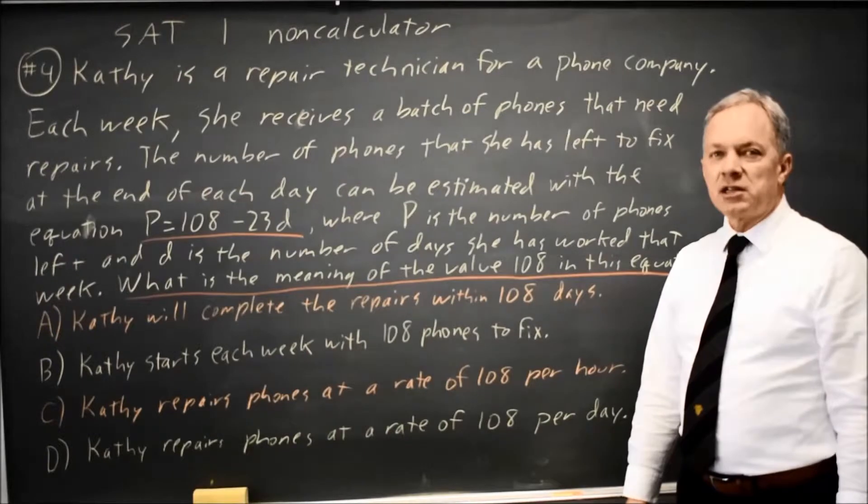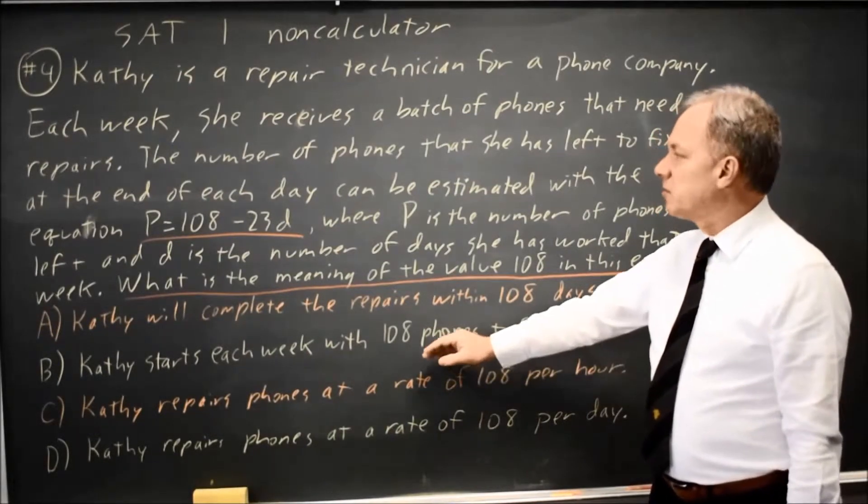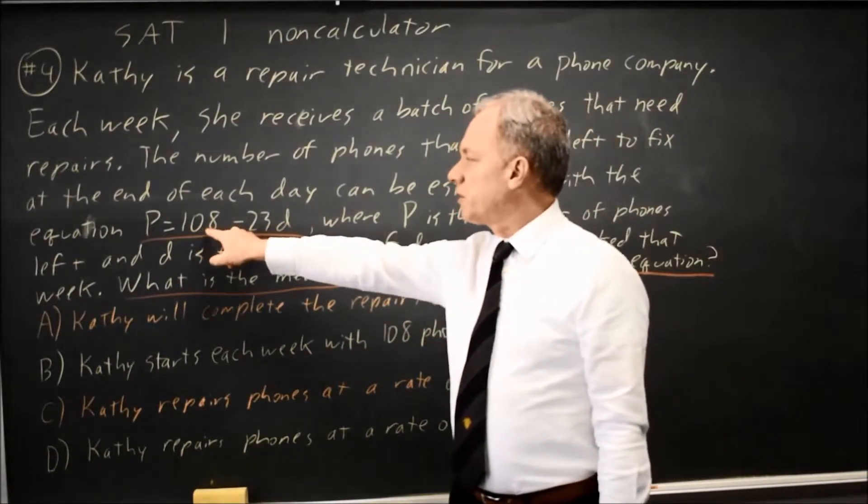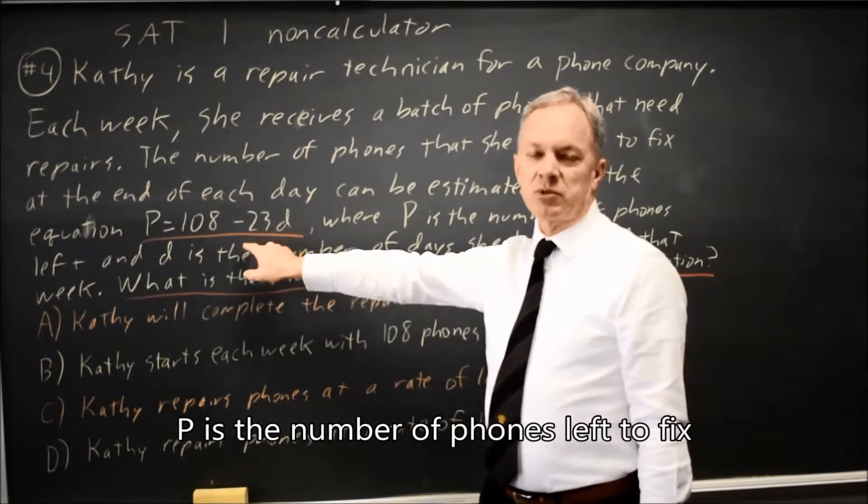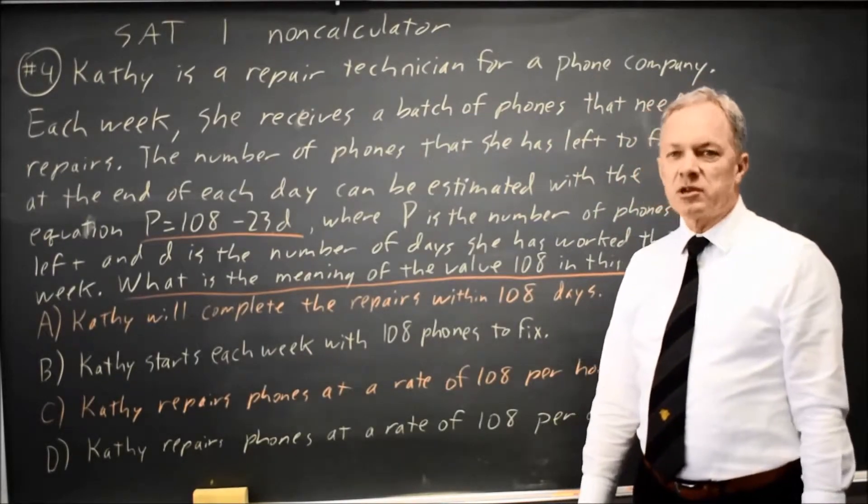Choice B, Kathy starts each week with 108 phones to fix. Starting week would be D equals 0. P equals 108 minus 23 times 0, P equals 108. That would be the number of phones she's starting with, or at least it would make sense for that.